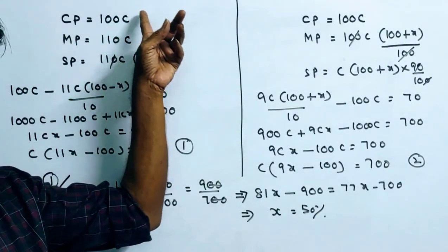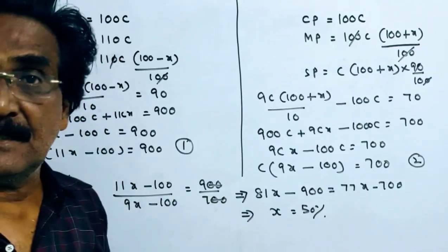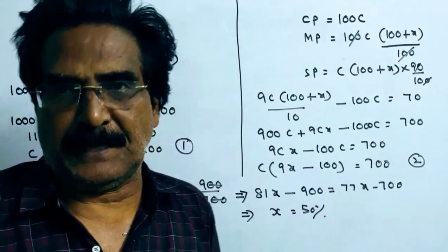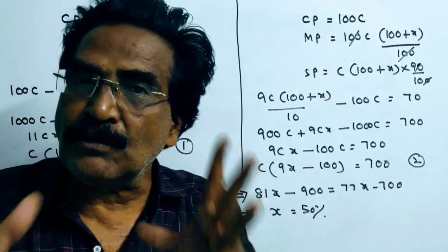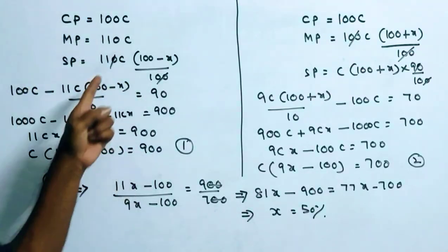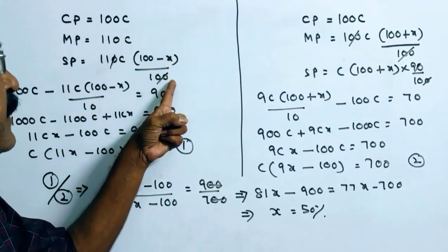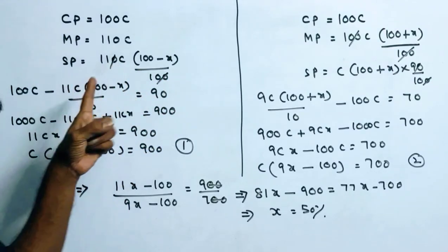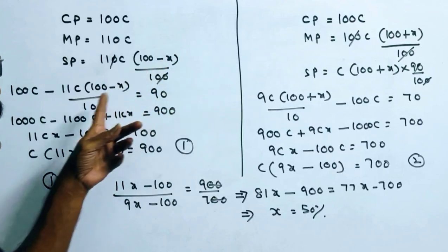Here we say cost price is 100C. Then the market price is 10% above the cost price, that is 110C, and sold at a discount of x percent. Then the sold price will be 110C into 100 minus x by 100. 00 cancel. So the sold price is 11C into 100 minus x by 10.